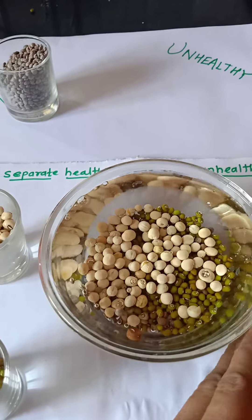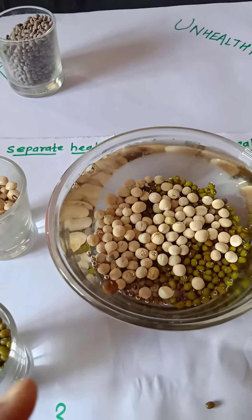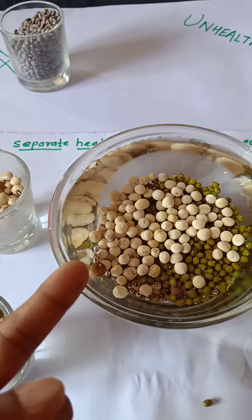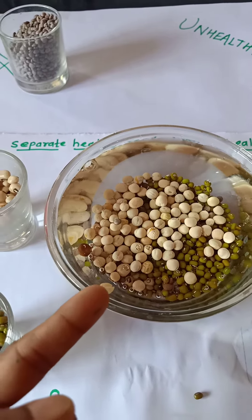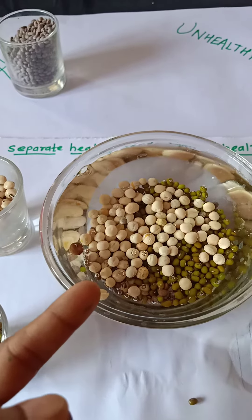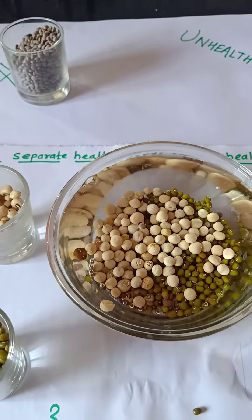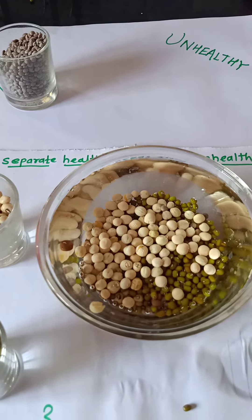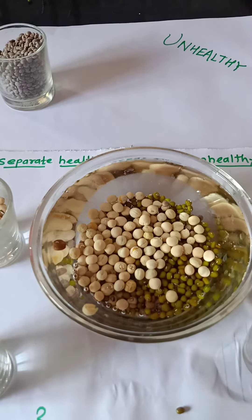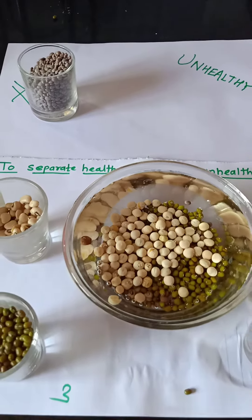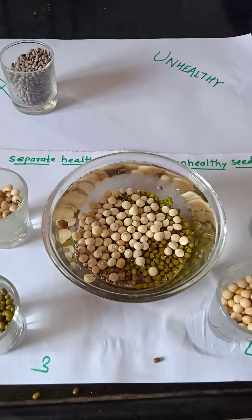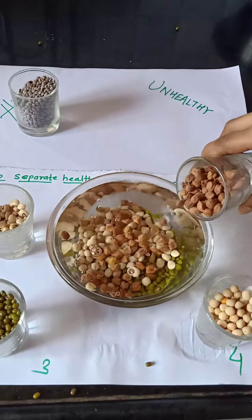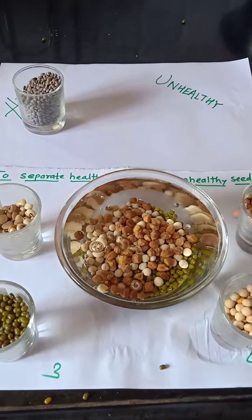Now with the fourth batch, you can see some seeds coming upward. There is chana and matar also coming up. Seeds floating upward means they are not healthy ones. Now we'll add the fifth batch.